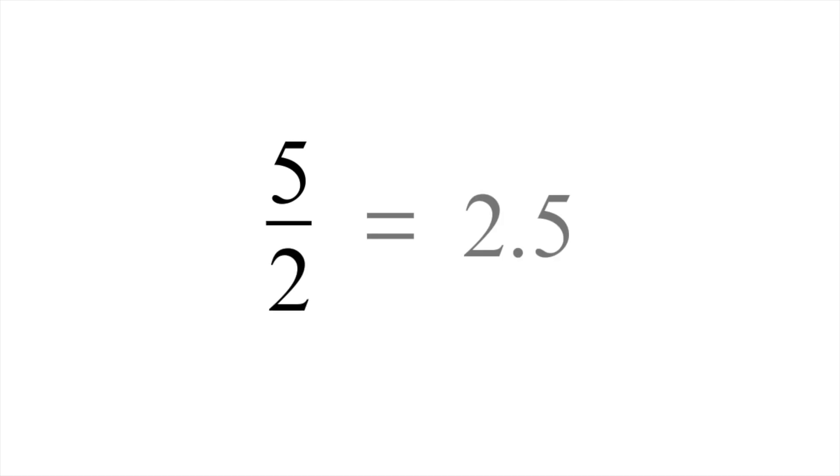So you'll notice we have some strange calculator behaviour here. Because we had an odd number to begin with — it ended in 5 — when you divide that by 2, we were expecting it to be 2.5 at the end, and it isn't; we got 3. So this is an example of strange calculator behaviour, and it's actually not the only example.